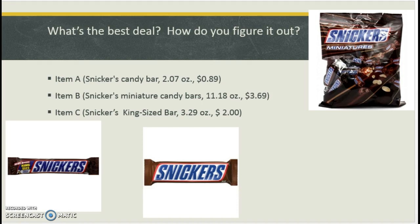So how do you figure out what the best deal is? A single Snickers bar for 89 cents. Or I just say Snickers bars are cheaper, I know. Or Snickers miniature candy bars where I have 11.18 ounces for $3.69. Or a big ol' king size bar. That's 3.29 ounces for $2.00. This one's actually kind of easy.